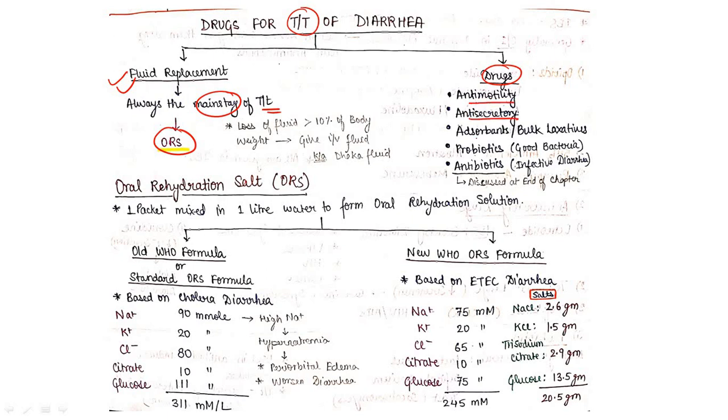Categories include antimotility drugs, anti-secretory drugs, adsorbents, probiotics, then antibiotics. First, coming to the oral rehydration salt (ORS). One package mixed in one liter water to form ORS. We have old WHO formula and new WHO ORS formula, also known as standard ORS formula. In the old formula, sodium must be 90 millimoles, potassium 20 millimoles, chloride 80 millimoles, citrate 10 millimoles, and glucose 111 millimoles.